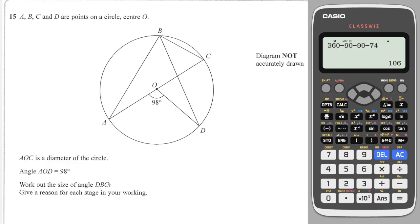Next question: we're asked to work out angle DBC. First I can work out the arrowhead angle — it's a classic angles at center are twice angles at circumference. So the angle at the circumference is 89° ÷ 2 = 44.5°.